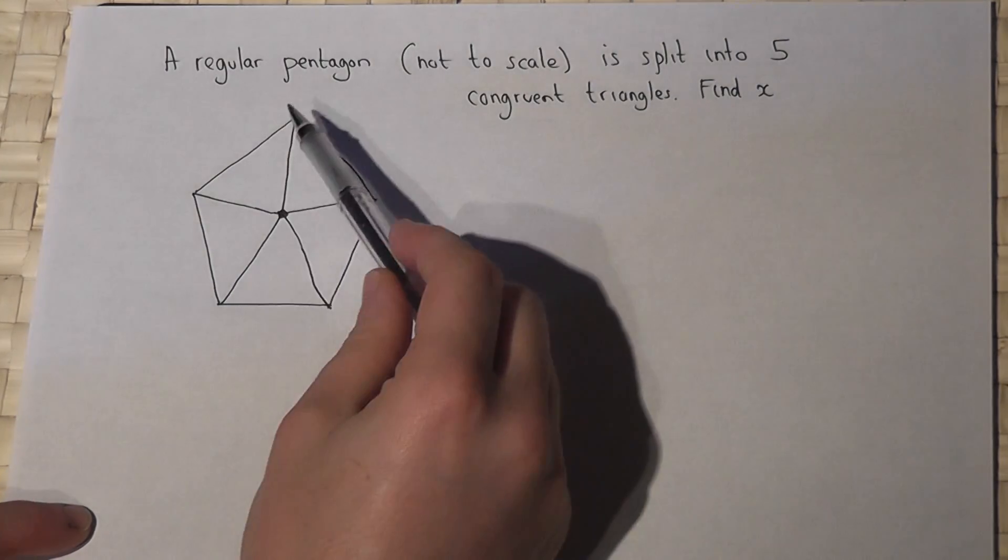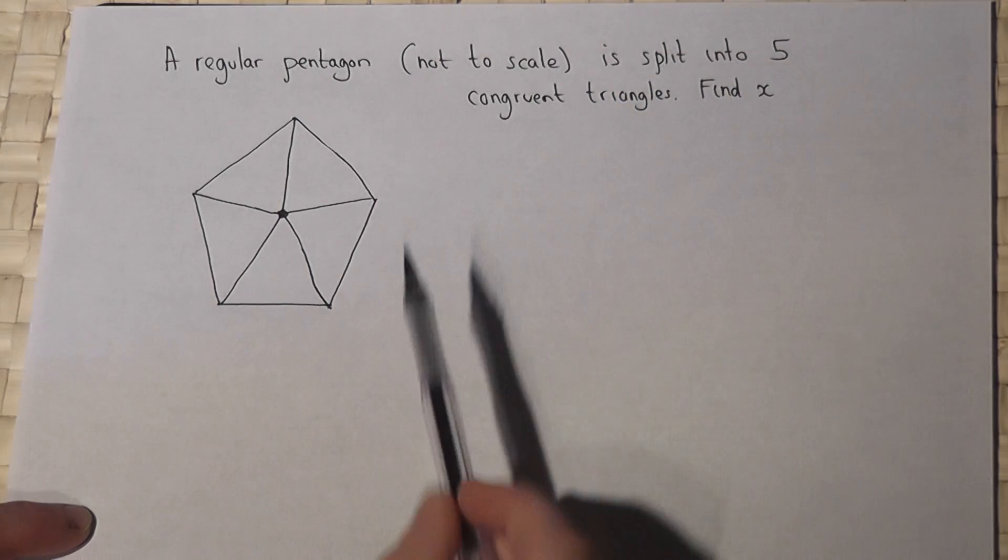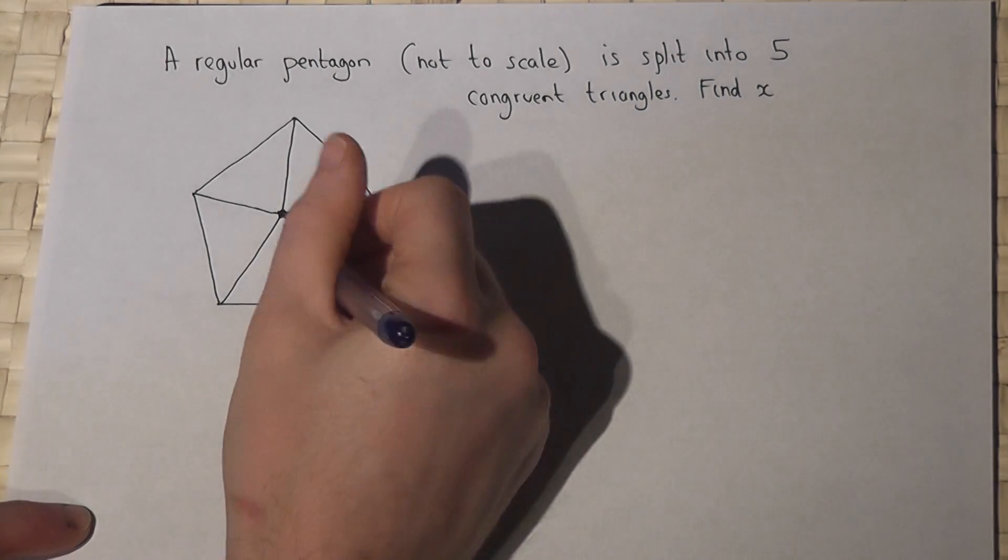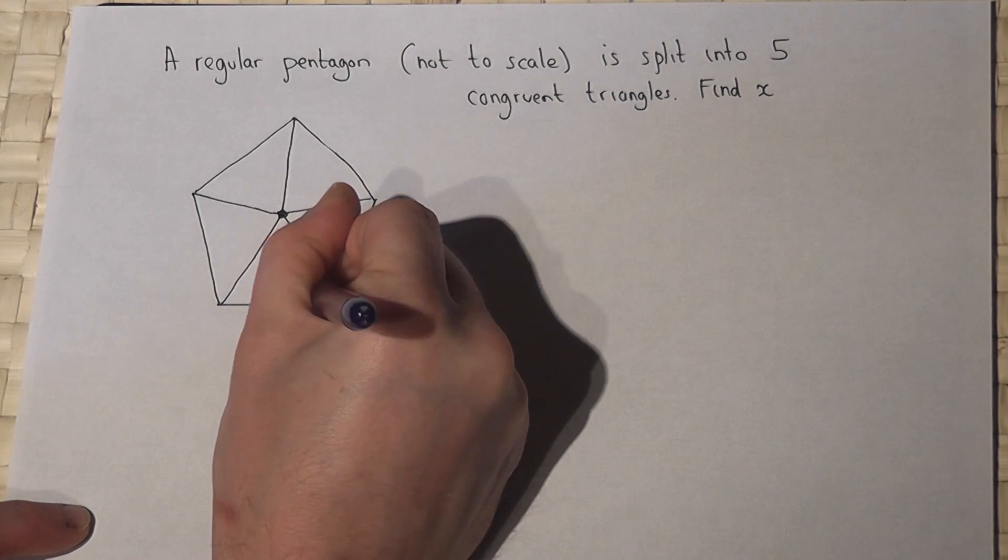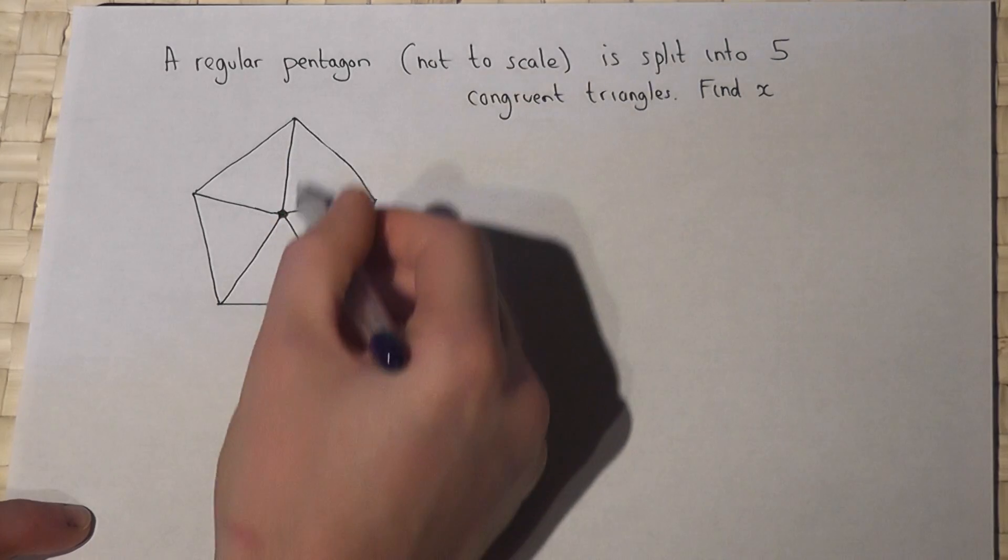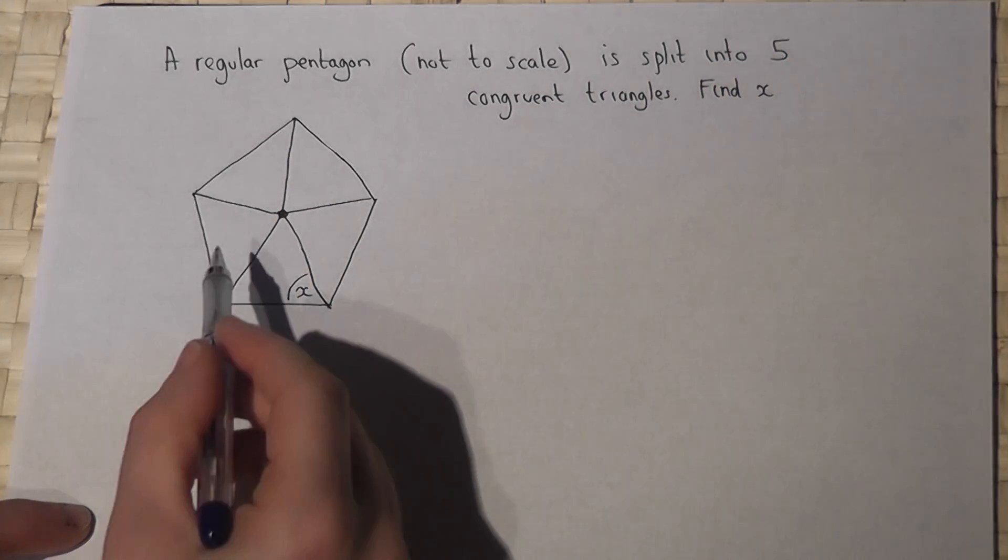In this problem we're given a regular pentagon which is not drawn to scale so we can't measure it, and we're asked to find angle X. Now we're told that these are congruent triangles which means that they're all the same.